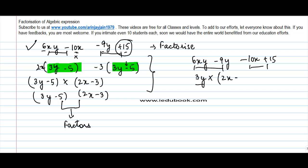2x minus 3. And then if you consider this group, you can take minus 5 as common because minus 5 will divide both this and this, and you can get 2x minus 3 again. Between these two, 2x minus 3 is common.